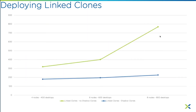As a proof point, we tested deploying linked clones at 400 users on 4 nodes, 600 on 6 nodes, and 800 on 8 nodes. With shadow clones enabled (the blue line), the provisioning time is basically flat as you scale up. When we manually disabled shadow clones, provisioning time increased linearly with scale — which is essentially how competitive products without locality will behave: the larger the group of users you're provisioning, the longer it takes.